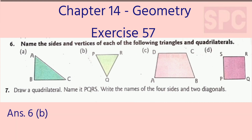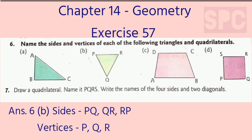Part B: Triangle PQR. In this triangle, there are three sides: PQ, QR, and RP. And the three vertices of this figure are vertex P, vertex Q, and vertex R.